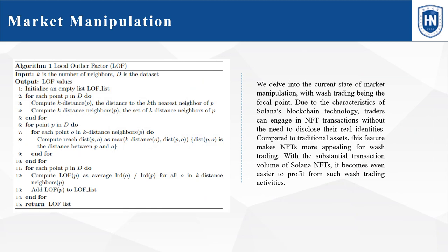We utilize the LOF algorithm to detect suspicious nodes in NFT wash trading. It is divided into three main steps. The first step calculates the reachable distance. The second step calculates the local reachable density of the node. The last step calculates the local suspicious factor value based on the reachable density.